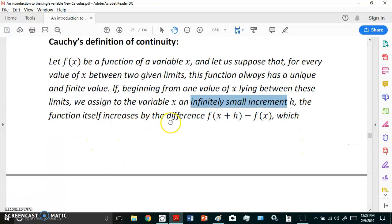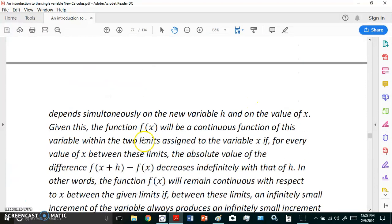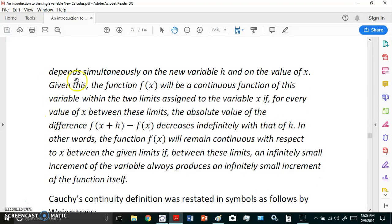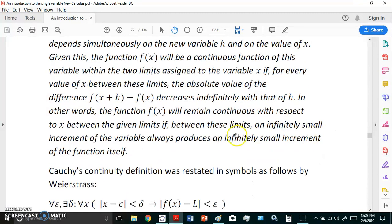h, the function itself increases by the difference which depends simultaneously on the new variable h and on the value of x. Given this, the function f(x) will be a continuous function of this variable within the two limits assigned to the variable x if for every value of x between these limits the absolute value of the difference decreases indefinitely with h. In other words, the function f(x) will remain continuous with respect to x between the given limits if between these limits an infinitely small increment of the variable always produces an infinitely small increment of the function itself.